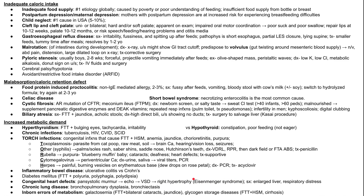If a ventricular septal defect is not fixed, you can have a change in flow patterns called Eisenmenger syndrome. Normally the left ventricle pumps harder, creating a left-to-right shunt. Over time the right ventricle enlarges — right ventricular hypertrophy — and eventually the shunt reverses direction. The baby will be in respiratory distress, may have an enlarged liver from blood backing up into systemic circulation, and this causes failure to thrive as blood is shunted away from the lungs.